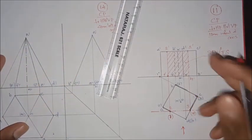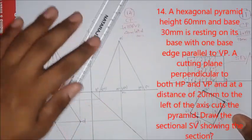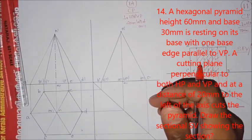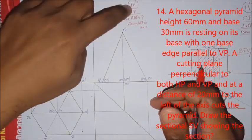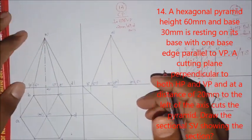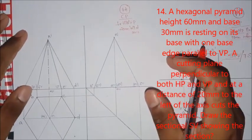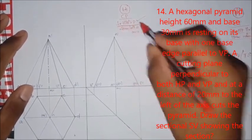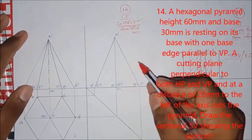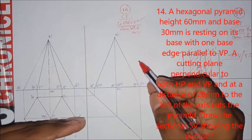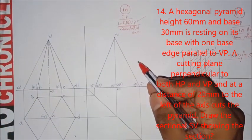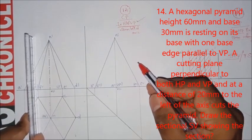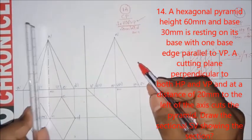I will solve this question. Question number 14. The section line is perpendicular to HP and VP. It is a vertical line. That means front view and top view. We are doing the problem — this is a single vertical line perpendicular to HP and VP.